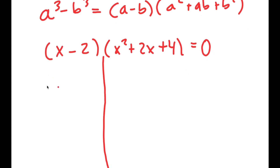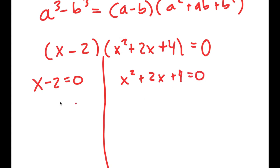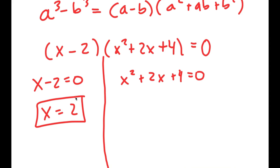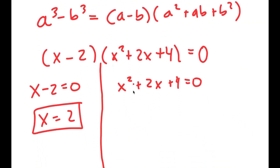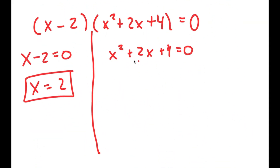Now I have two equations: x minus 2 equals 0, and x² plus 2x plus 4 equals 0. From x minus 2 equals 0 I get x equals 2, which was the solution we already found. But the quadratic equation gives us two more solutions, so I'm going to use the quadratic formula to solve x² plus 2x plus 4 equals 0.